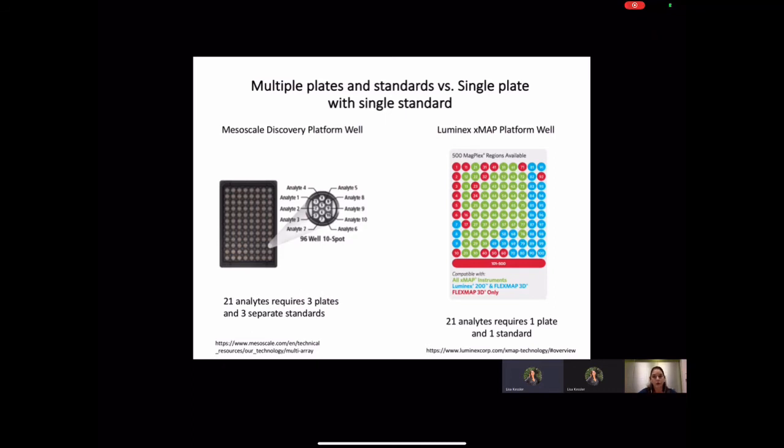On the right is the bead region map for the Luminex XMap platform. It requires one standard black-walled 96-well plate in which all 21 beads or analytes can be mixed together in a liquid suspension. One well has the potential to hold 100 or more different analytes. The user just needs to add the sample, an assay buffer, and the pre-mix beads, and then begin the incubation on an orbital shaker.